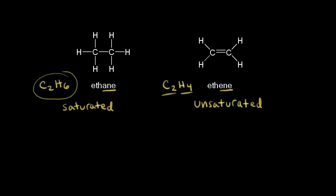Let's look at the carbons present in both molecules, and we'll start with ethane. This carbon is sp3 hybridized, and so is this one, so ethane contains two sp3 hybridized carbons. We know the geometry around an sp3 hybridized carbon is tetrahedral, so we should have tetrahedral geometry around both of these carbons.